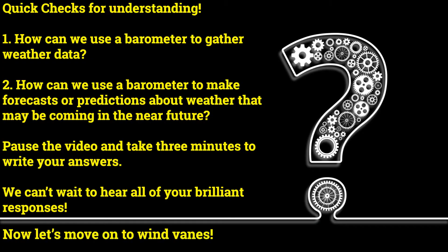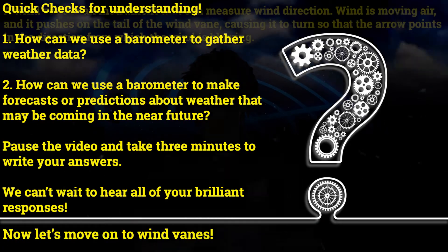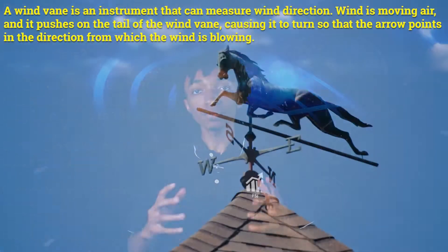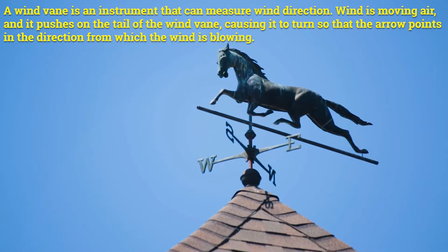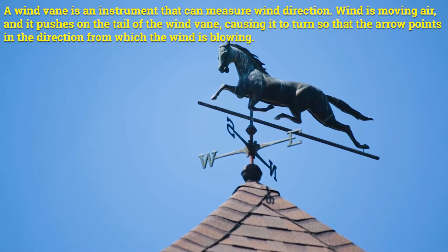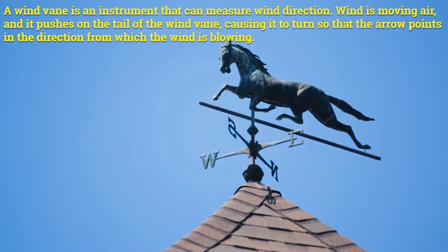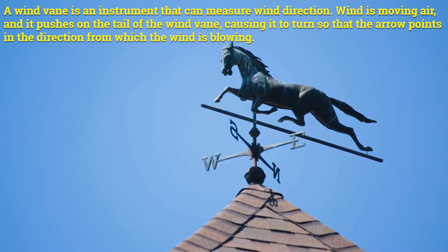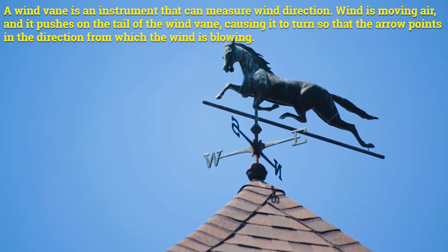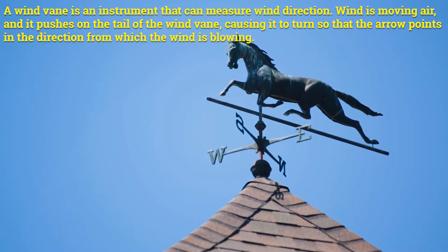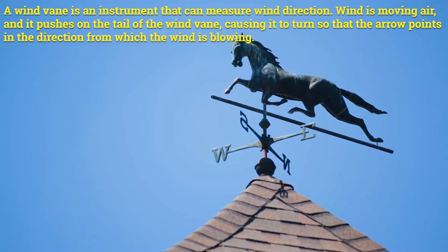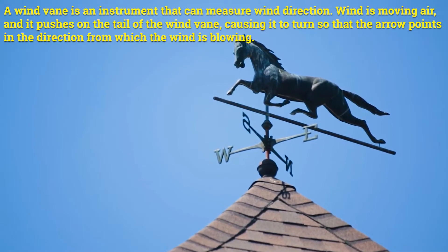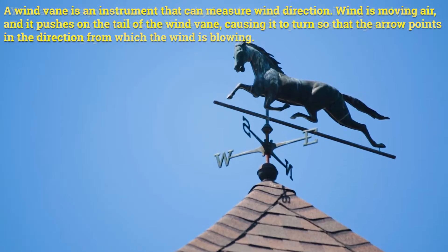Now let's move on to wind vanes. A wind vane is an instrument that can measure wind direction. Wind is moving air and it pushes on the tail of the wind vane, causing it to turn so that the arrow points in the direction from which the wind is blowing.